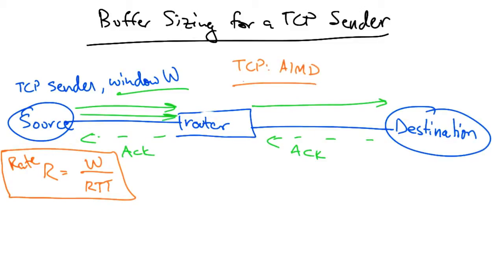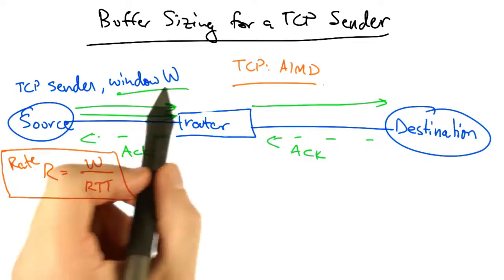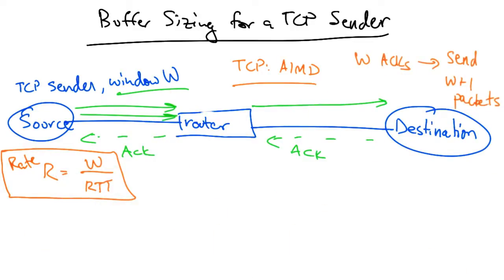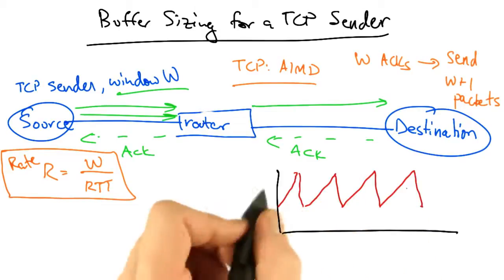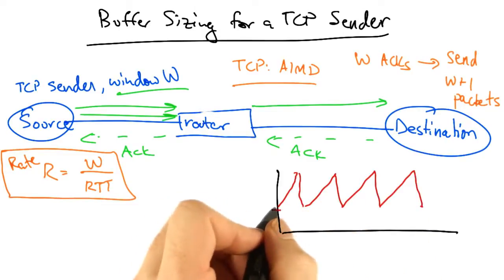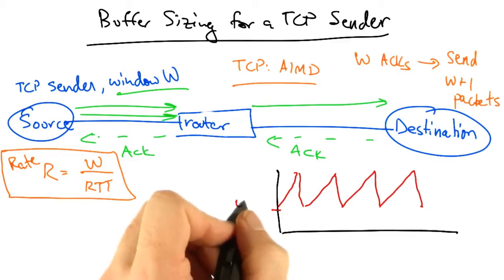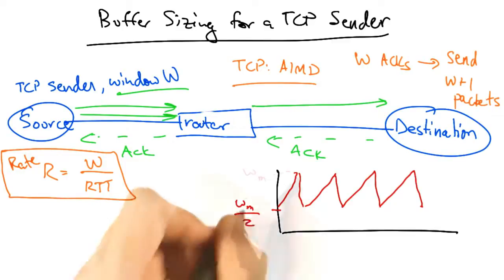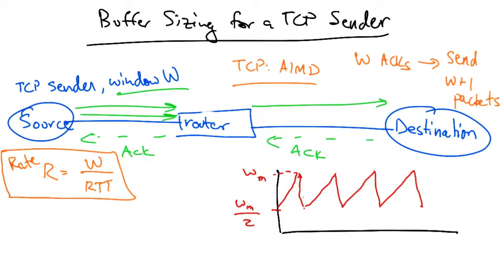Now remember that TCP uses additive increase multiplicative decrease, or AIMD congestion control. So for every W ACKs received, we send W plus 1 packets. And our TCP sawtooth will look something like this. We'll start at a rate W max over 2, increase the window to W max, and then when we see a drop, we will apply multiplicative decrease and reduce the sender's sending rate to W max over 2 again.